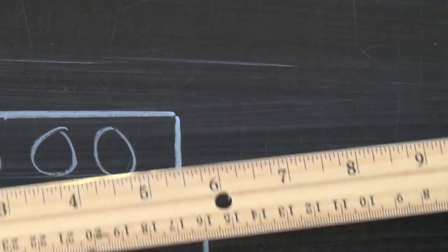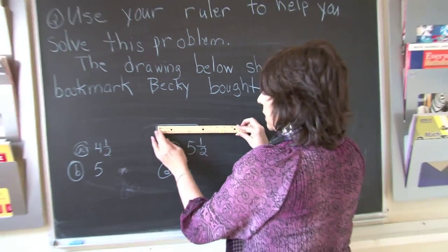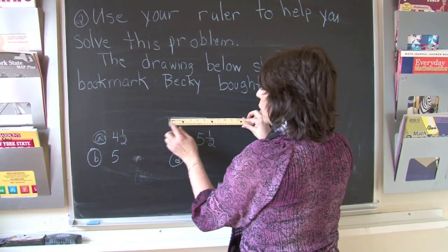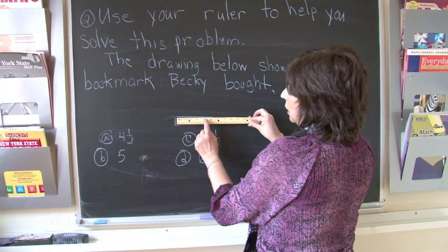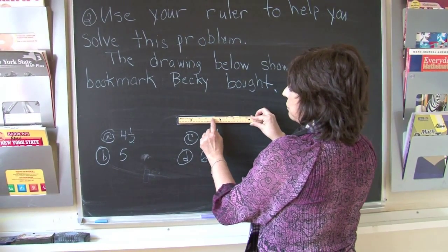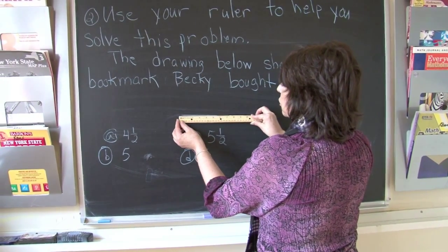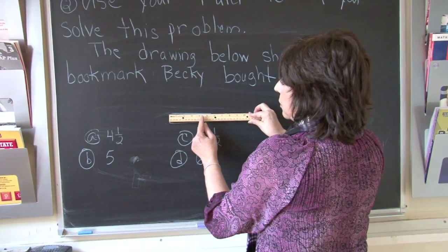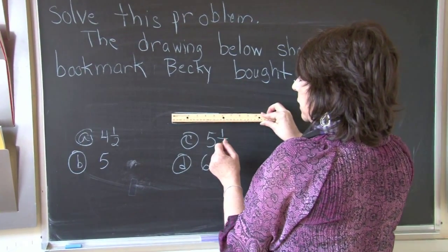So let's look at our choices. Is it four and a half? No, it is greater than that. Four and a half would fall in between four and five, but it is greater than that. So four and a half is not a choice.